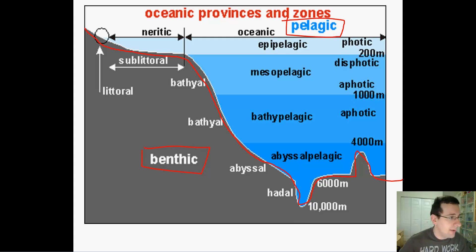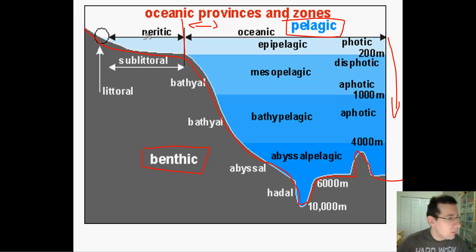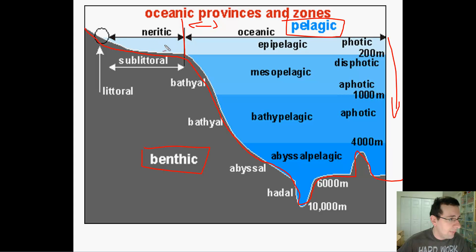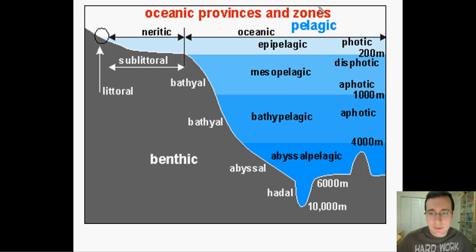In terms of the pelagic zones, there are two ways of dividing them: vertically or horizontally. The horizontal division gives two basic areas: the oceanic pelagic zone and the neritic pelagic zone. The neritic pelagic zone refers to the water region sitting on top of the continental shelf — the nutrient-rich part of the ocean. Most life forms, including most phyto- and zooplankton and most nekton, will be living in the neritic zone.